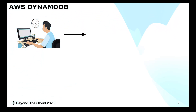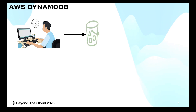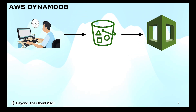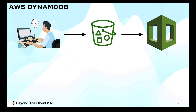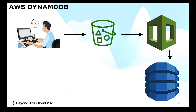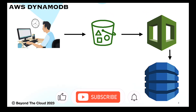AWS recommends always uploading the template from an S3 bucket. So first we will create one S3 bucket, upload our CloudFormation template to that S3 bucket, and from that S3 bucket we will create the stack. The stack will be created, and upon creation of the stack the DynamoDB table will be created. It's as simple as that.